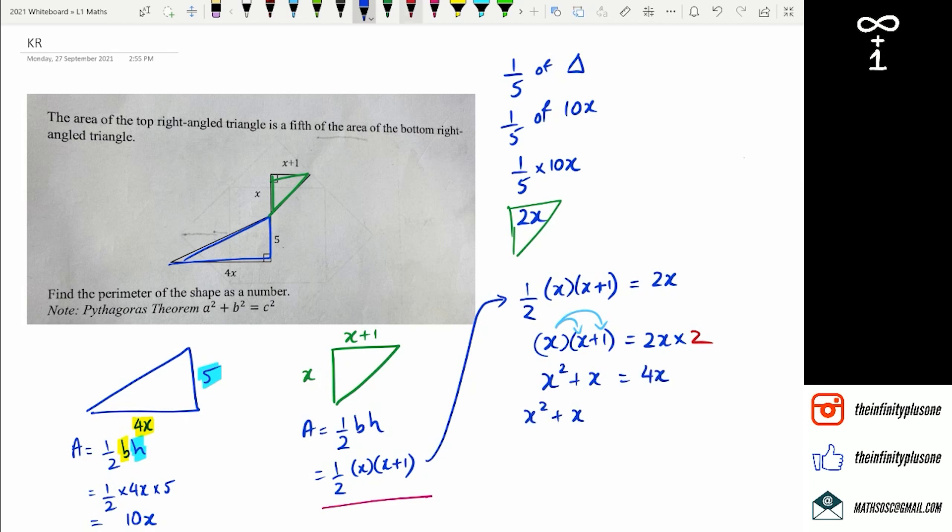Rearranging it one more time. I've got x squared plus x minus 4x equals 0, or x squared minus 3x equals 0.